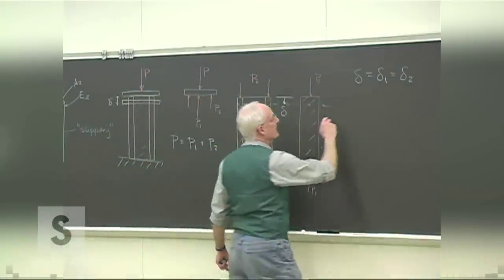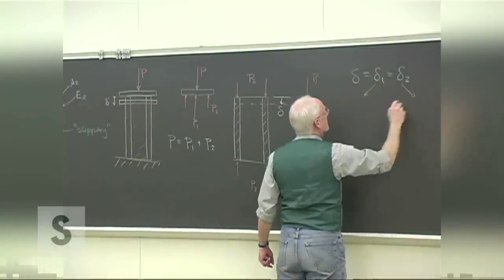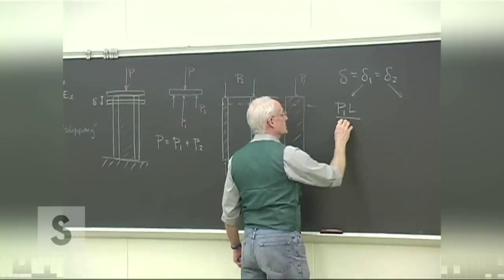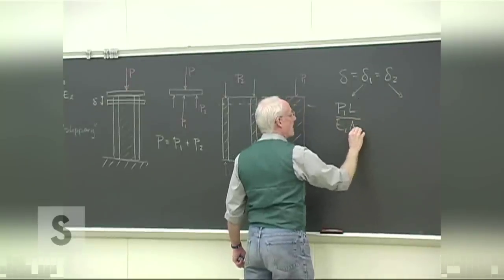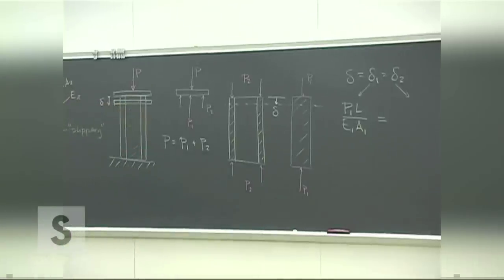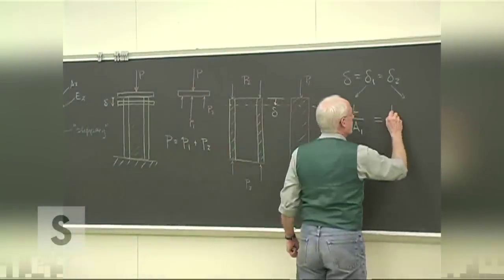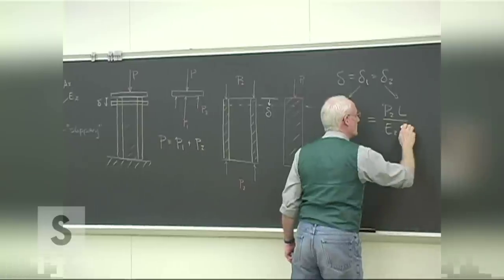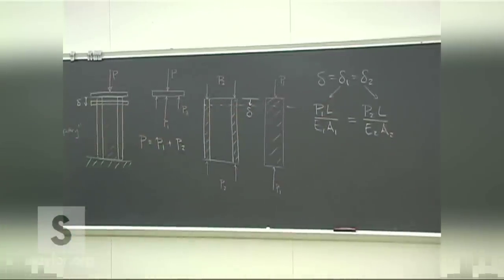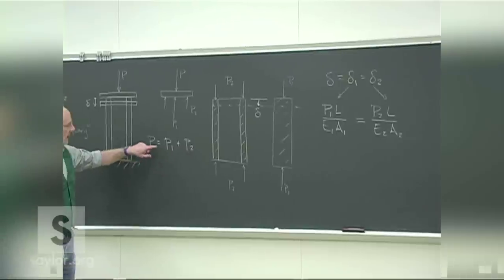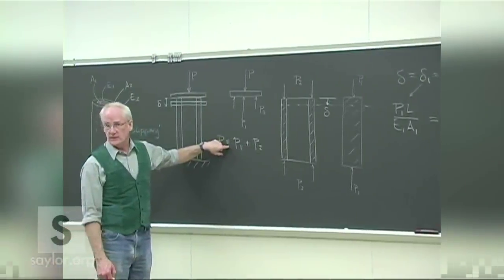Setting the deformations equal: P1·L over E1·A1 equals P2·L over E2·A2. The length of each is the same so no subscript is needed on L. We now incorporate the geometry and material properties. Together with P = P1 + P2, we have two equations and two unknowns — we can solve the problem.